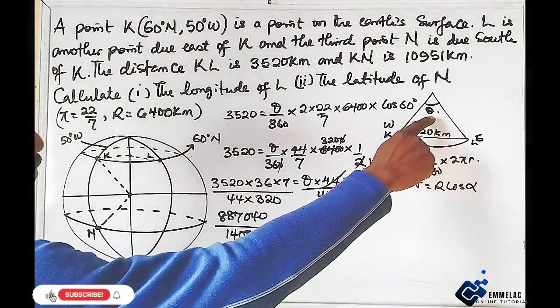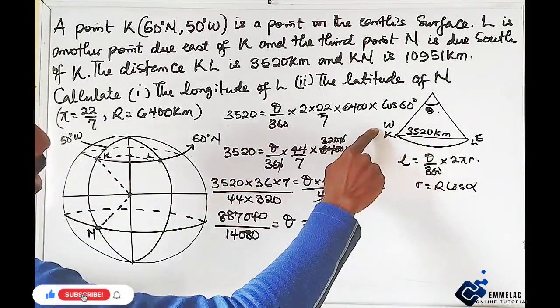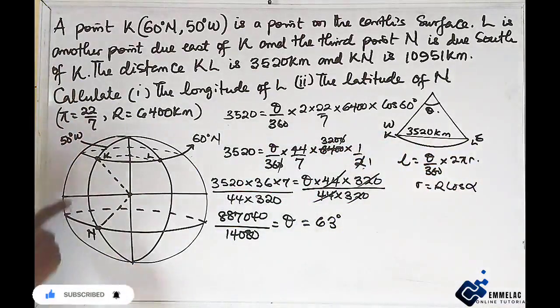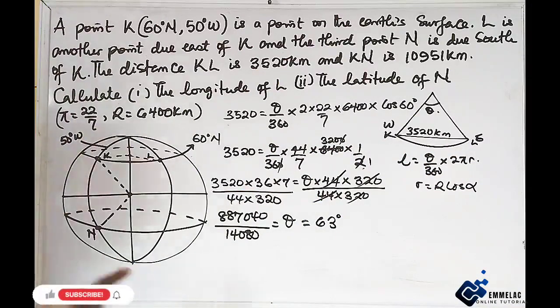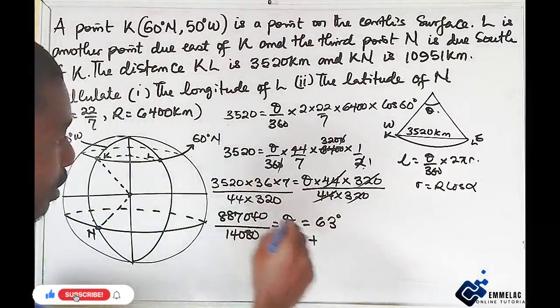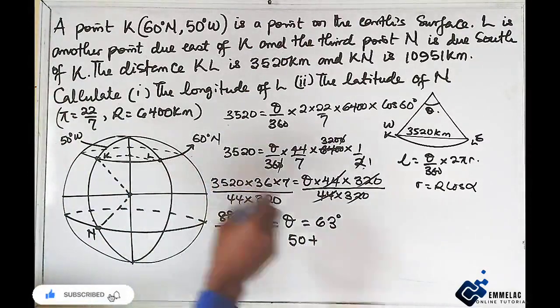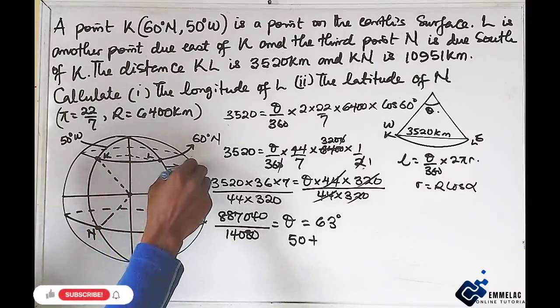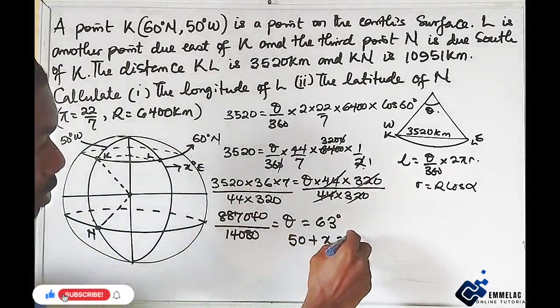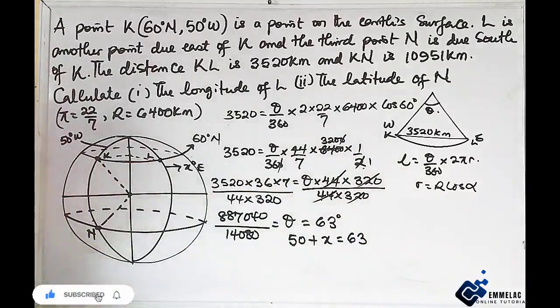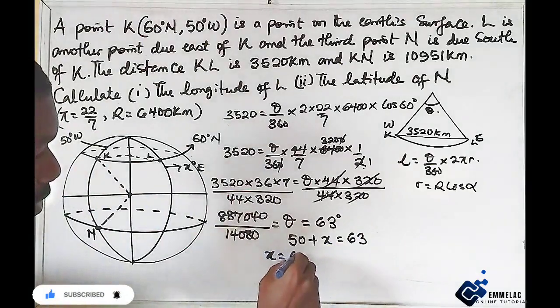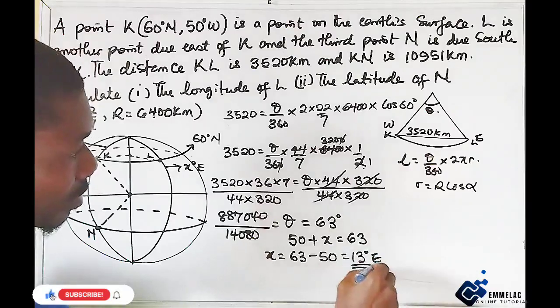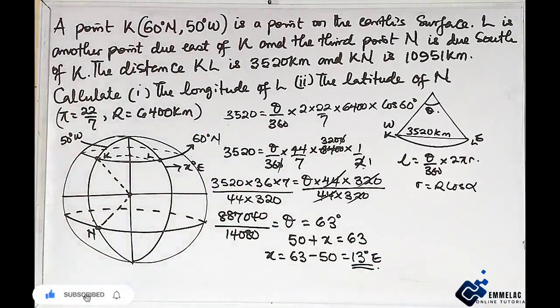Take note, I said that the angular difference here is the sum of the coordinate of K and L. That of K is 50, so it implies that 50 plus X equals 63. X then equals 63 minus 50, and this will give us 13 degree east. So that is the longitude of L.